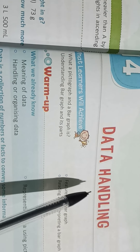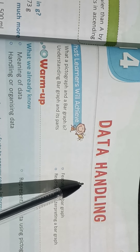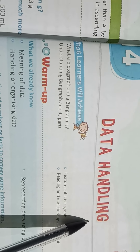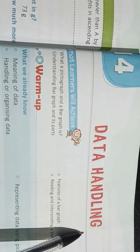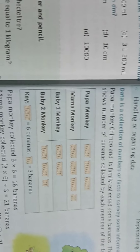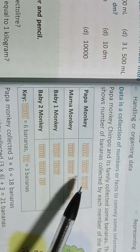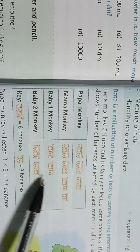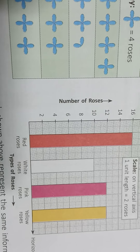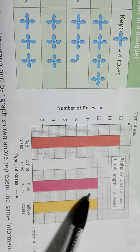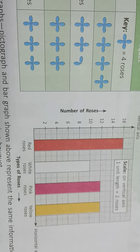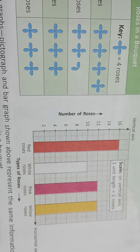Now, what is data handling? Data handling is the process of gathering, recording and presenting information in a way that is helpful to analyze the thing. There are different ways of data handling. The types of data handling are like pictograph, when we represent the data in the form of pictures, or bar graph, when we represent the data using bars, or line graph and all. You will learn about different types in your higher classes.